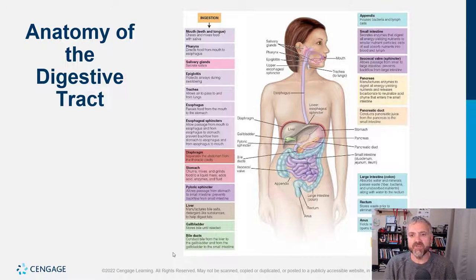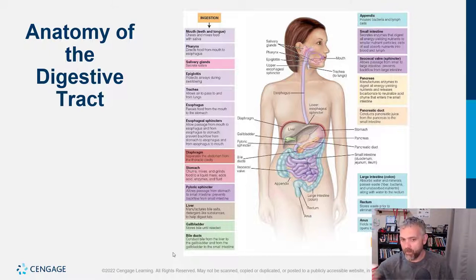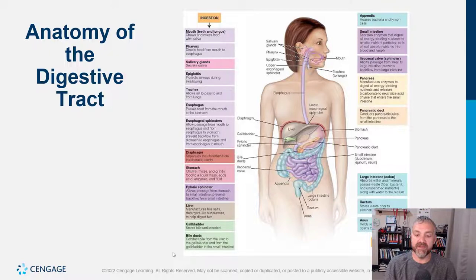The small intestine is where ninety percent of digestion and absorption of food takes place — it's the most important organ of your GI tract. Everything prior to it has really just prepared the food to be fully digested and absorbed. The small intestine is broken down into three parts: the duodenum, the jejunum, and the ileum. At the end of the small intestine, the ileocecal valve separates the ileum from the cecum, which is the beginning of the large intestine. The ileocecal valve determines when food contents move from the small intestine to the large intestine, and it also prevents contents of the large intestine from leaking back. There are millions of bacteria in the small intestine, but billions and trillions of them in the large intestine.